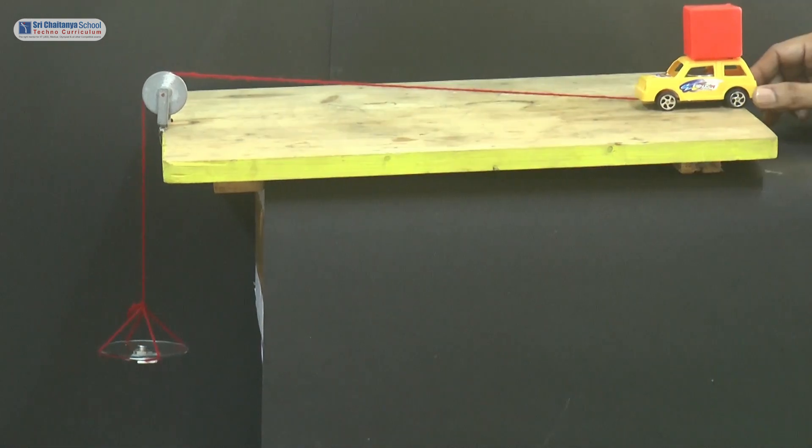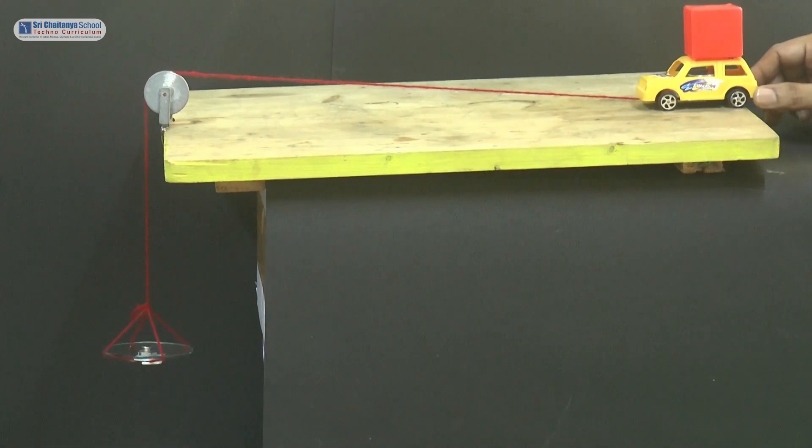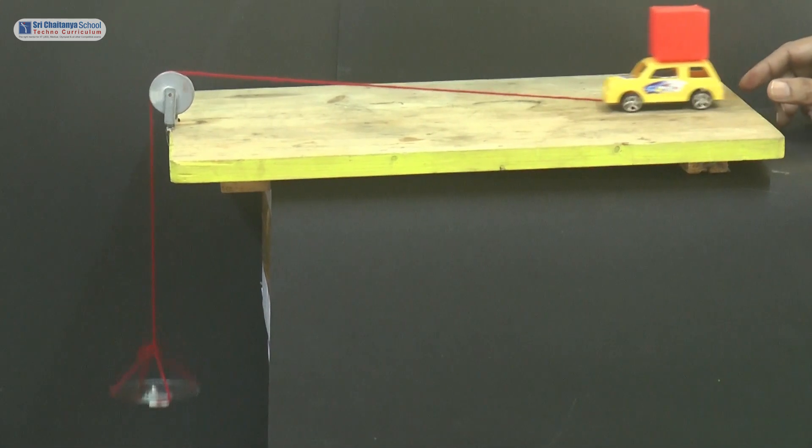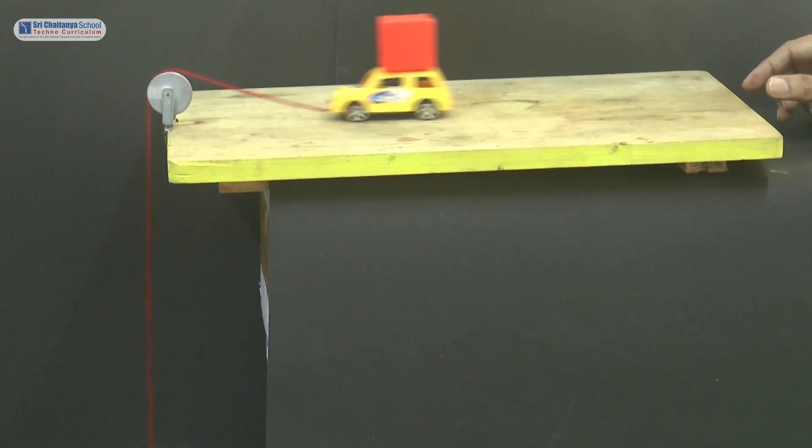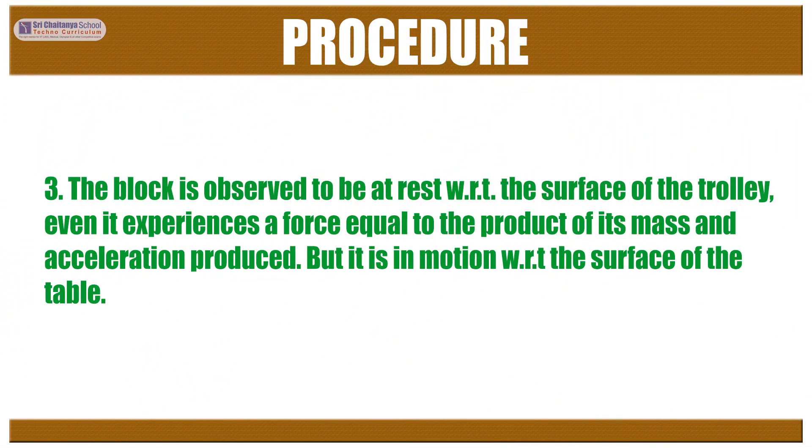We will notice that the trolley with the block on it moved towards left with an acceleration. The block is observed to be at rest with respect to the surface of the trolley, even though it experiences a force equal to the product of its mass and acceleration produced. But it is in motion with respect to the surface of the table.